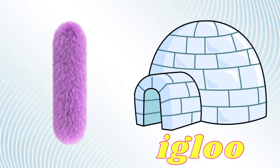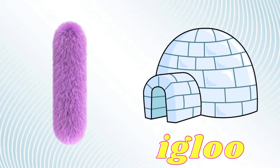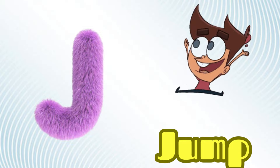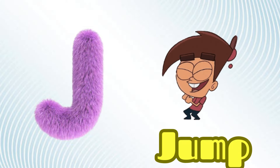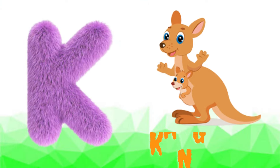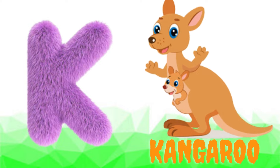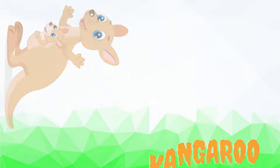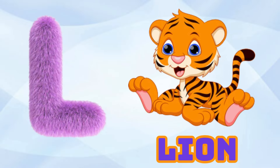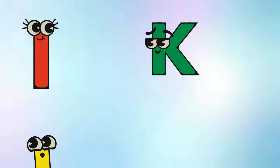I is for Igloo, I-I-Igloo. J is for Jump, J-J-Jump. K is for Kangaroo, K-K-Kangaroo. L is for Lion, L-L-Lion.